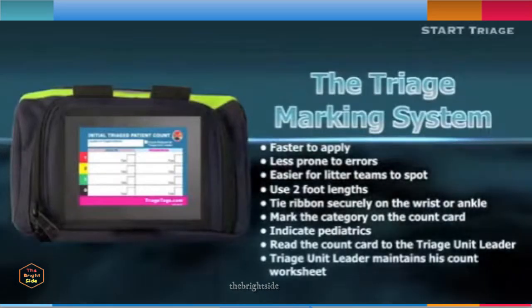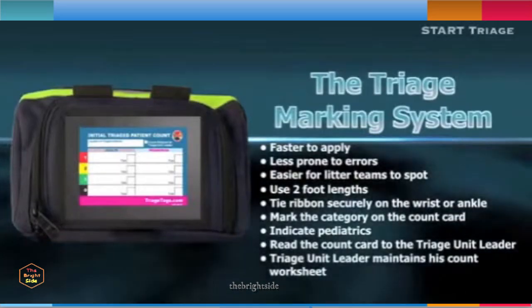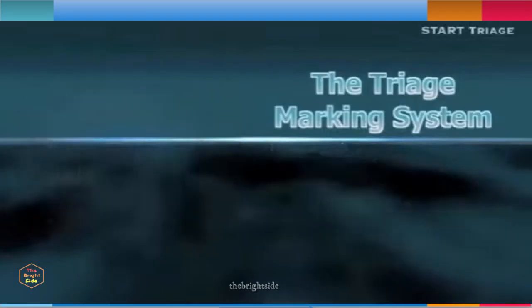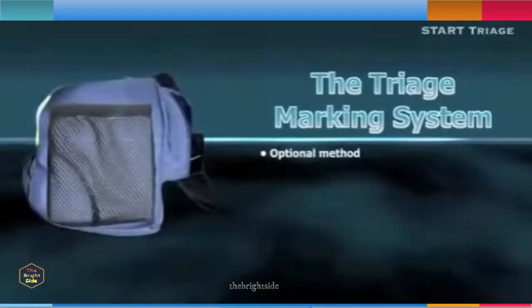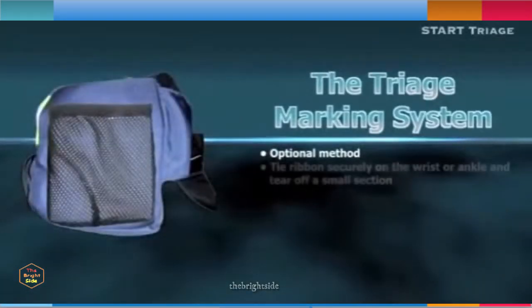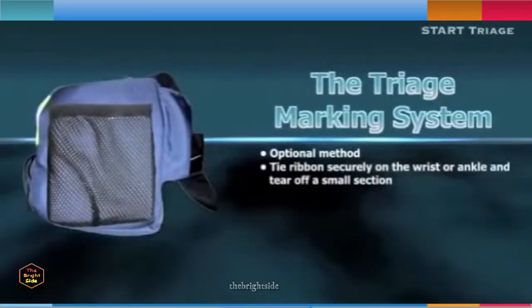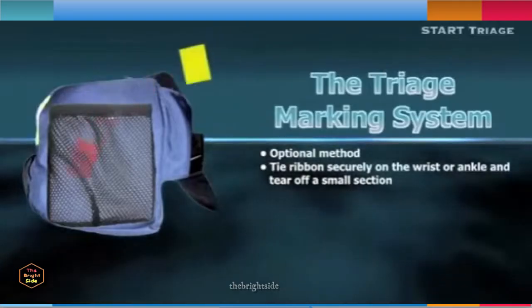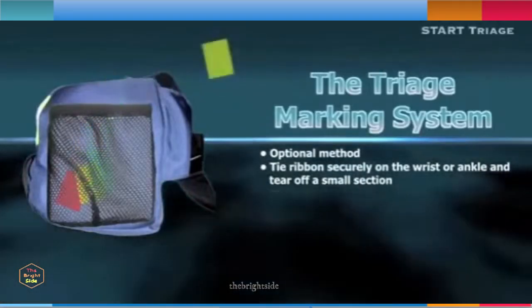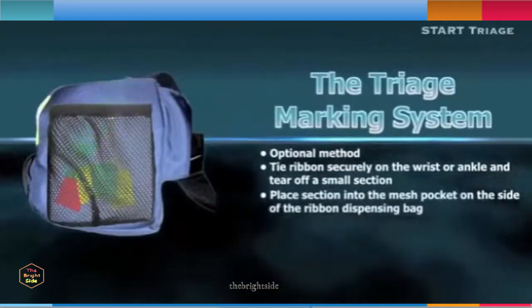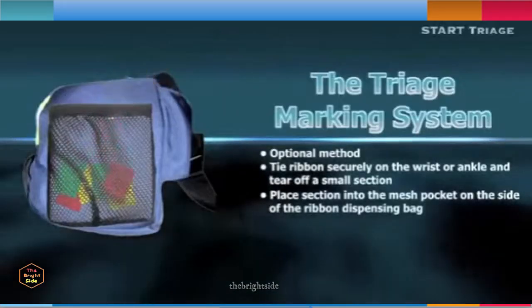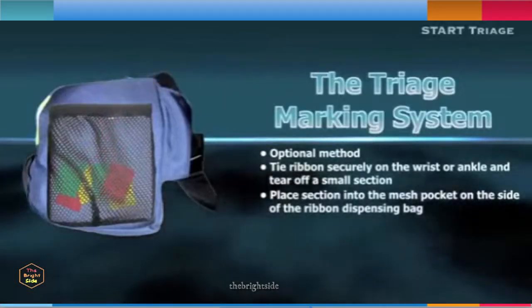The triage unit leader will maintain a tally worksheet for accountability and post-incident documentation. An optional method for recording a triage patient count is to utilize a section of the ribbon. To use this method, tie the ribbon to the patient and tear off a small section, then place this section into the mesh pocket on the side of the ribbon dispensing bag.